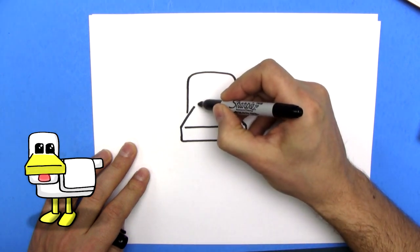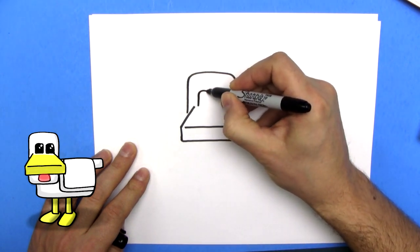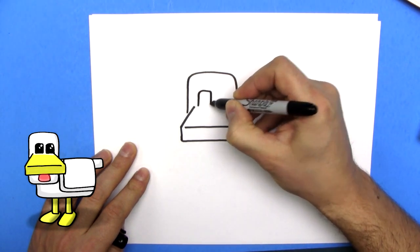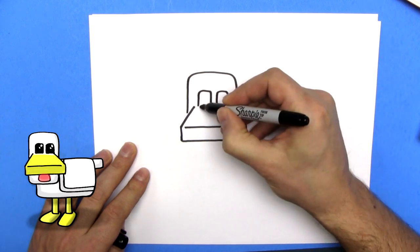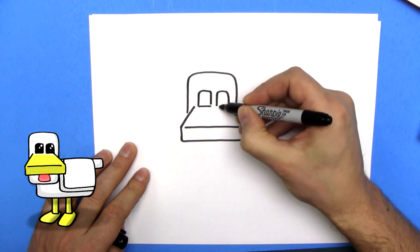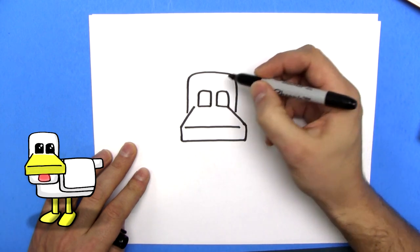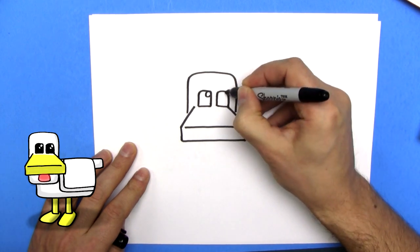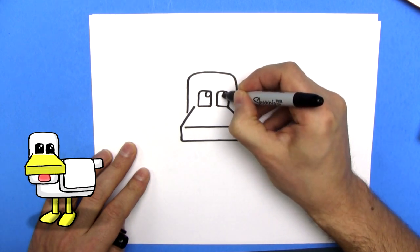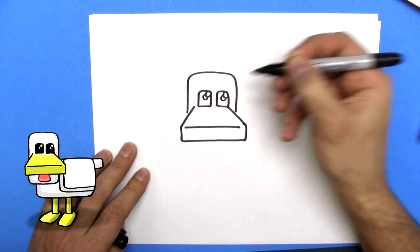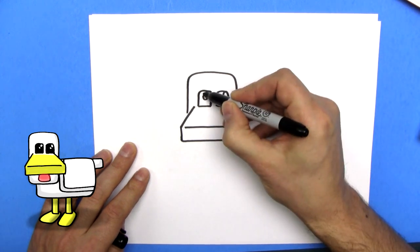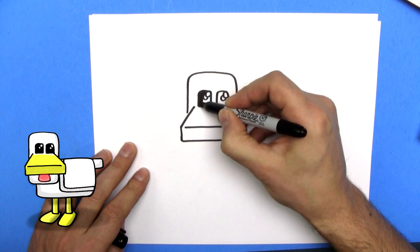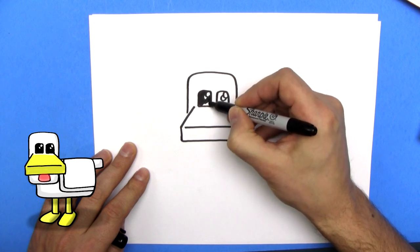We're going to draw some eyes here. We're going to draw kind of rectangular, sort of square eyes, like this, and then right across the bottom here. And we're going to draw a circle, and another circle on that circle, so it's kind of overlapping.